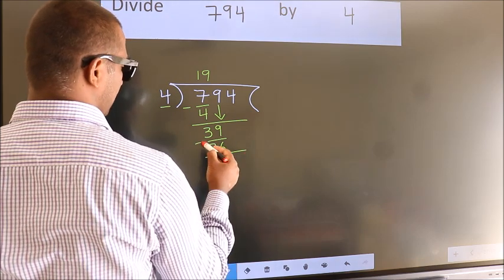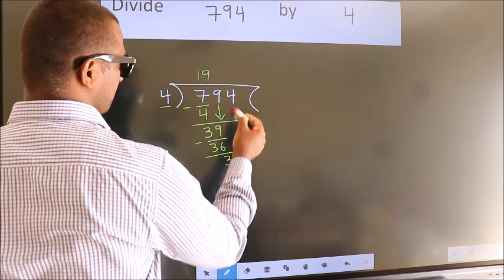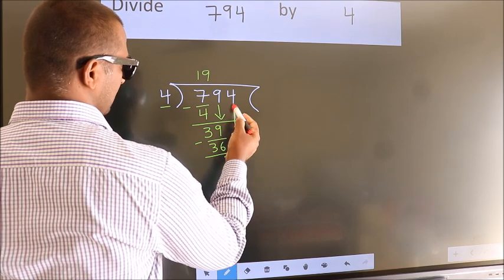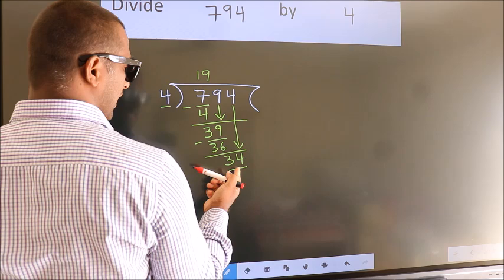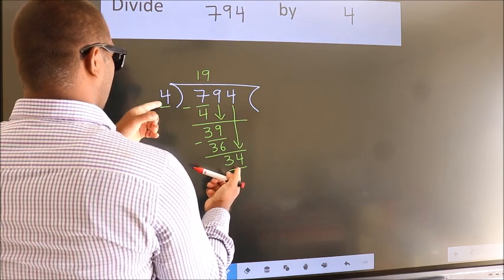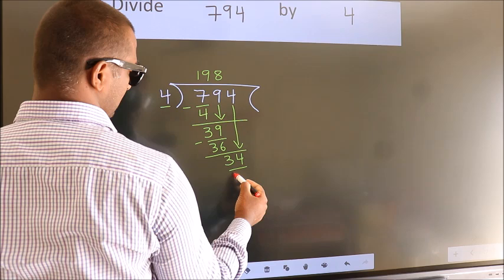Now, we subtract. We get 3. After this, bring down the beside number. So, 4 down. So, 34. A number close to 34 in 4 table is 4, 8, 32.